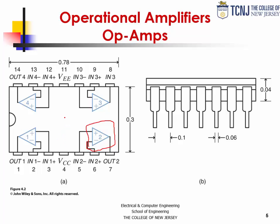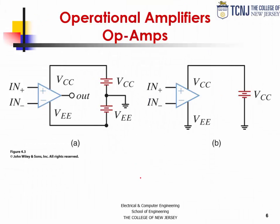We also need to provide power to the chip. So we're going to have a positive voltage connection, usually called VCC, and a negative power connection, usually denoted as VEE. As mentioned, the op-amp has three primary terminals: two input terminals — the positive input and the negative input — and an output terminal. It also has power terminals, the positive power and the negative power, which are referenced to ground. VEE is usually a negative voltage and VCC is a positive voltage. This is what is called a bipolar op-amp, meaning it takes negative and positive voltage supplies referenced to ground.